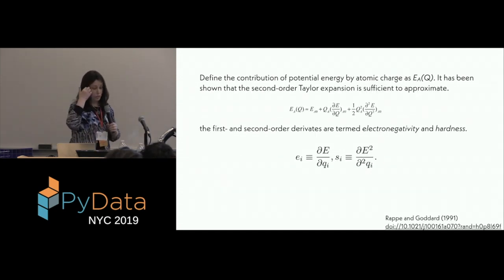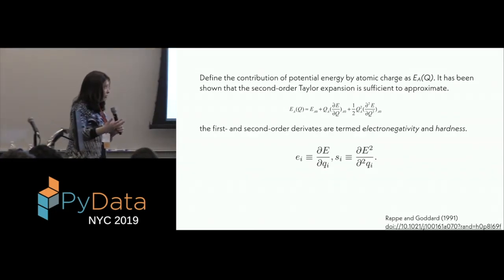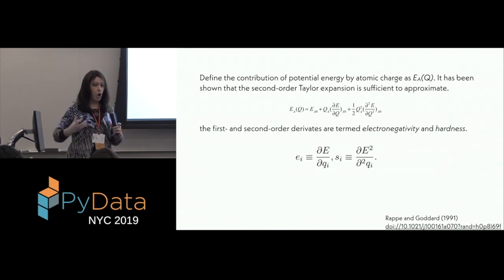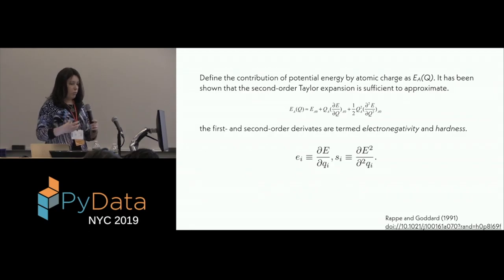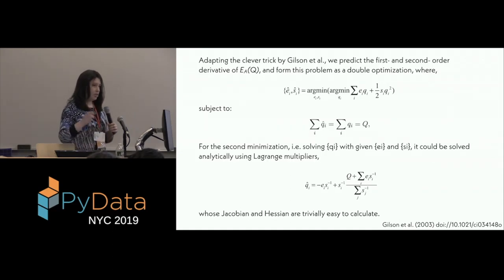So there's a different trick that we can use. So in this case, we take the potential energy of the molecule that the charges contribute, and it has been shown that the second order Taylor expansion of this potential energy is sufficient approximation. So we can define the first order derivative and the second order derivative as E, which is the electronegativity, and S, which is the hardness. So the electronegativity is the tendency of an atom to pull electron charges to itself. So the more electron charges it pulls to itself, the more it will lower the potential energy. And the hardness is the tendency of atoms to bond to each other. So a molecule that's harder will resist the tendency of accumulating charges.